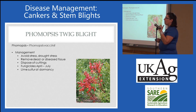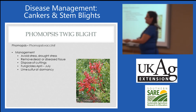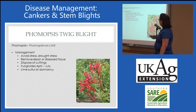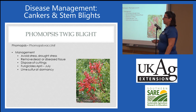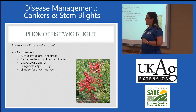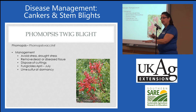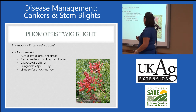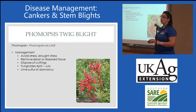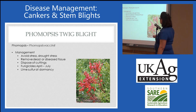How do you manage it? Avoid stress — that includes drought stress, pH stress, and nutritional deficiencies, as well as weed competition. Remove dead, dying, or diseased wood and dispose of cuttings. For fungicides, use them April through July; the rainier it is, the later you'll use them. For a lower-input system, spray right at flowering and right after flowering. Lime sulfur, which is organically certified, can be applied at dormancy to suppress those overwintering structures.